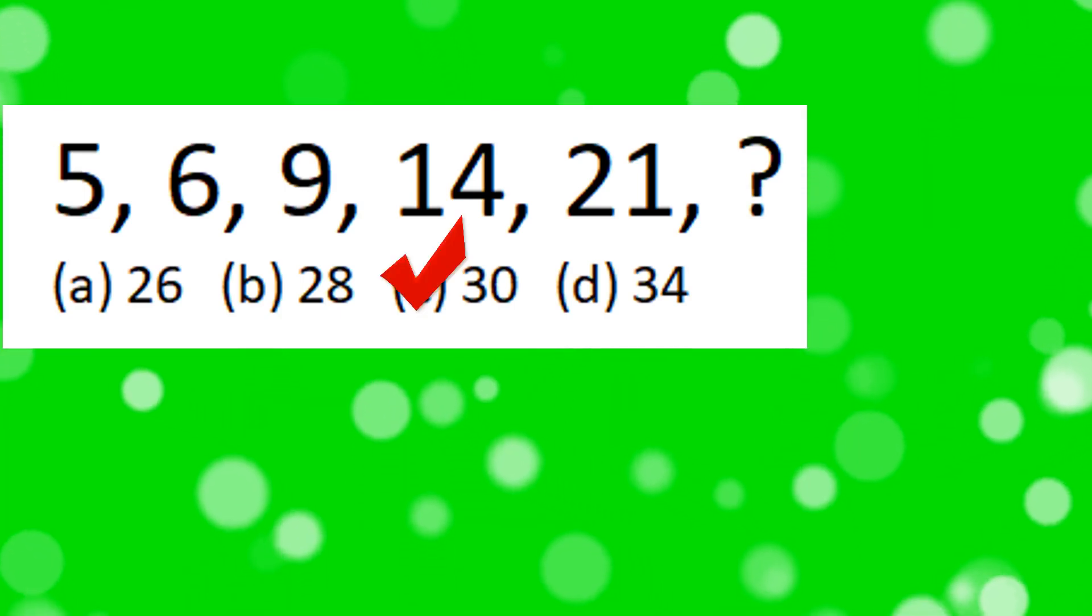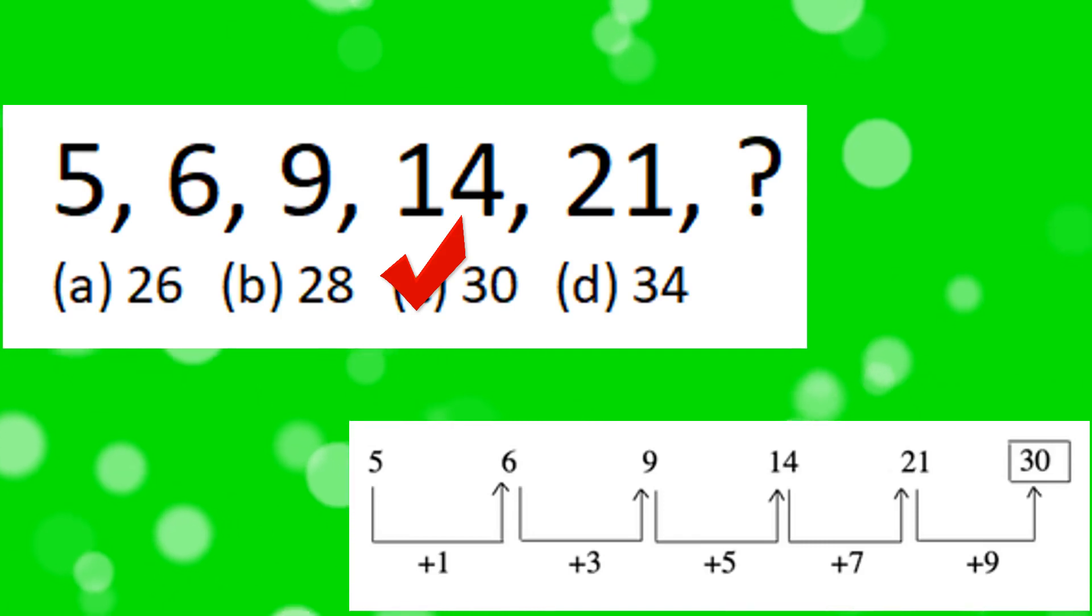Option C, that is 30, is the correct answer. The series consists of a pattern of addition of consecutive odd numbers like 5 plus 1 equals 6, 6 plus 3 equals 9, and so on.